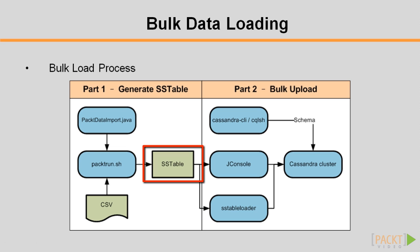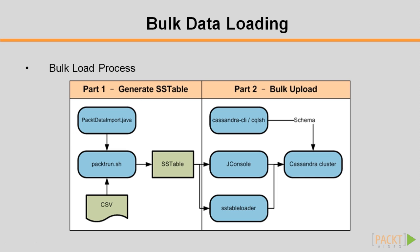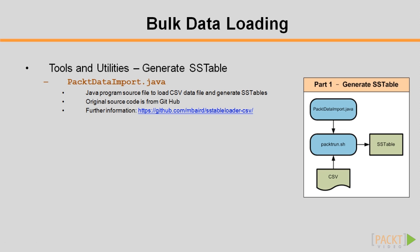As such, we need a way to generate the SSTable. I developed a Java program, packedDataImport.java, to load the data in comma-separated values (CSV) and generate the input SSTable — that's what Part 1 outputs. packedRun.sh is simply a shell script to set the Java classpath and streamline the execution of packedDataImport.java. packedDataImport.java is not provided by Cassandra; I made it for this video by modifying a third-party Java program available at GitHub called DataImport.java. The major change is to replace Random Partitioner with Murmur3 Partitioner, which is the recommended partitioner for Cassandra version 1.2 or above, and to handle CSV data and generate SSTable more easily.